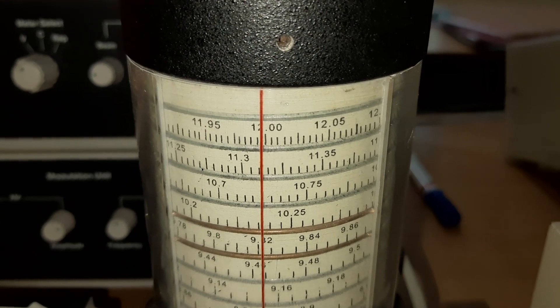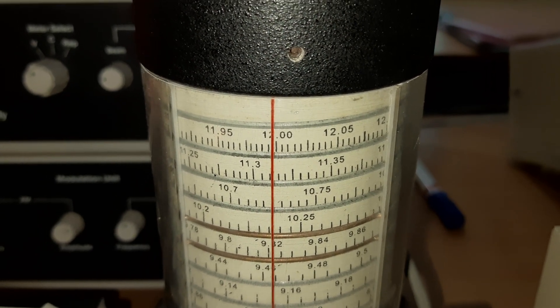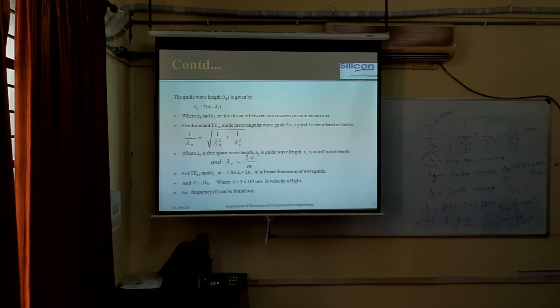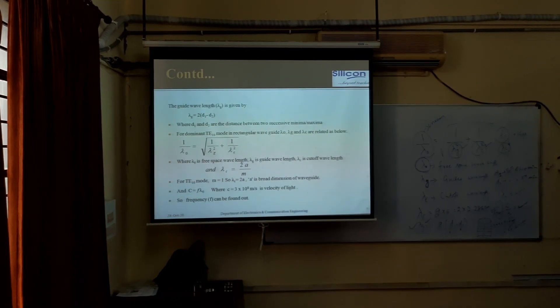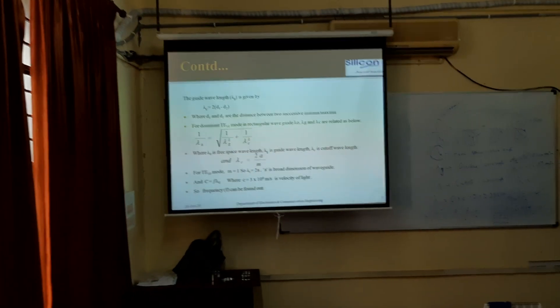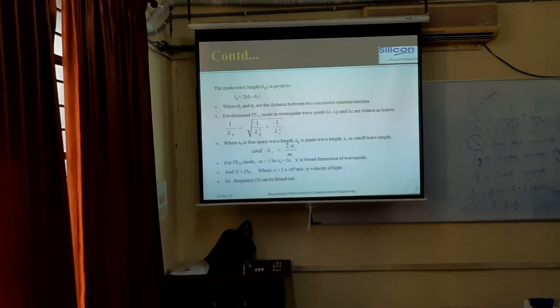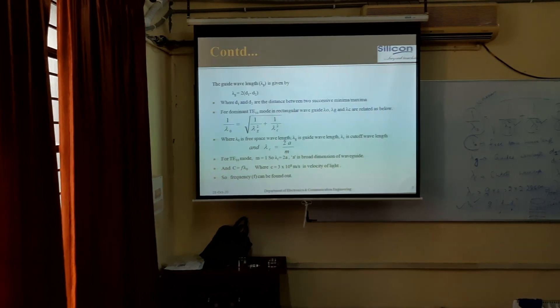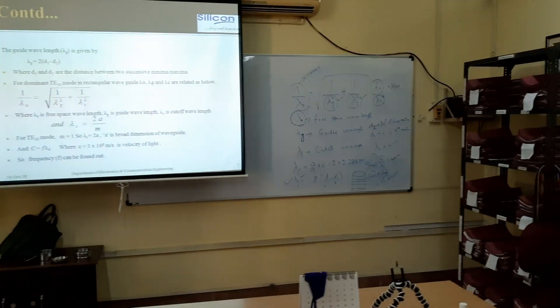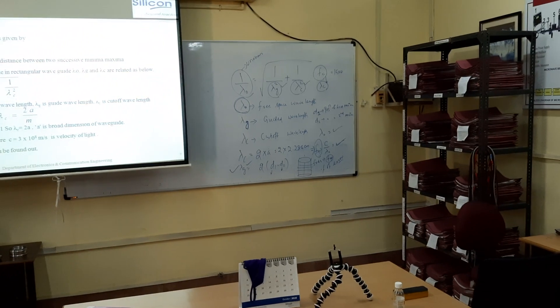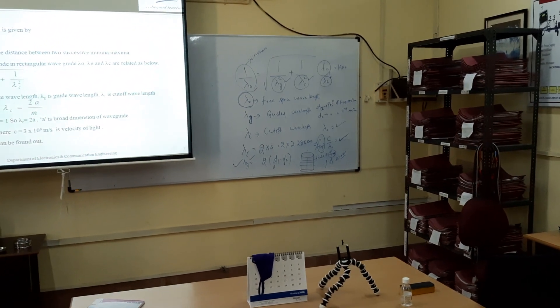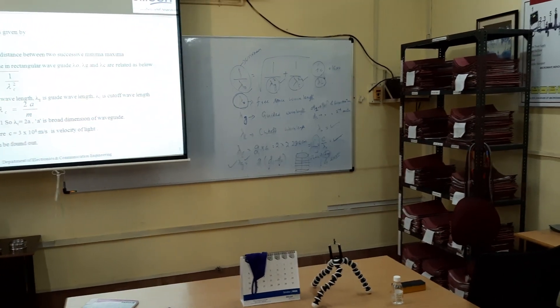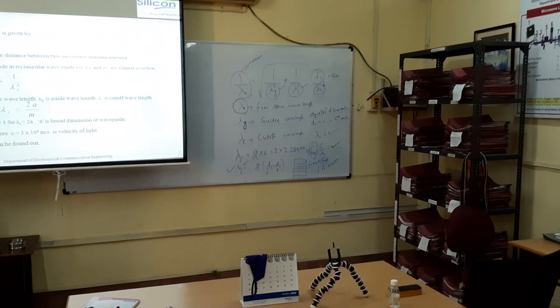Now you will calculate the theoretical frequency using the formula: 1/lambda_0 squared equals 1/lambda_g squared plus 1/lambda_c squared. Lambda_c is known: lambda_c equals 2 times a, which is 2 times 2.286 cm. If we calculate lambda_g, then lambda_0 can be calculated.